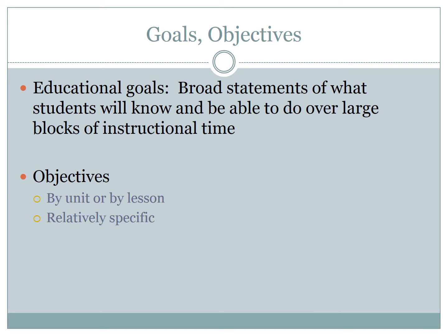Now let's talk about the difference between goals and objectives. Educational goals are broad statements of what students will know and be able to do over large blocks of instructional time. They're generally very general — what you hope to get to over many lessons or even over the entire year. Objectives are more specific, and they build under the goal toward it. Often objectives will be by a unit or even by a particular lesson and relatively specific, so objectives over time build towards educational goals.